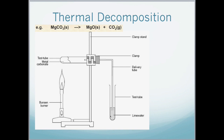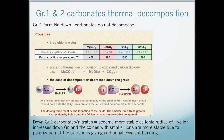In group 1, from sodium down, the carbonates will not decompose. In group 2, both carbonates and the nitrates become more stable because the ionic radius of the positive ion increases down the group. The oxides with the smaller ions are more stable due to the polarization of the oxide ions giving additional covalent bonding. The ease of decomposition decreases down the group. The smaller ion, with its greater charge density, holds onto the O²⁻ ion to make a more stable compound. So that is why it is harder to decompose calcium carbonate than it is magnesium carbonate.